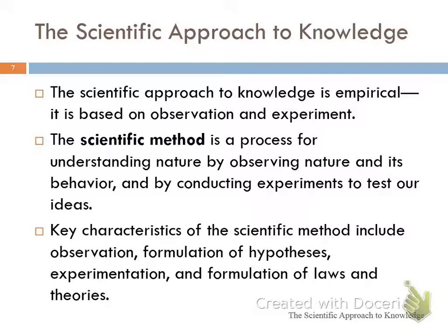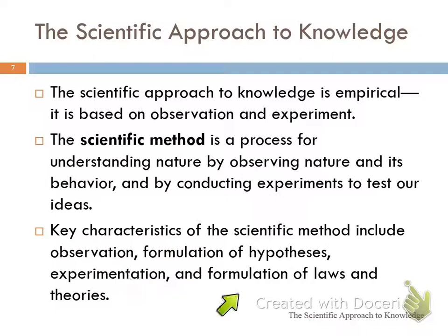We see things happening, we make an observation, and then we have an idea about that, and we do an experiment to test it. The scientific method is a process by which we can understand nature by observing it, observing its behavior, and then conducting experiments to see if we were right or not. Key characteristics include observation, the formulation of hypotheses, experimentation, and after those go around in a circle for a while, we get the formulation of laws and theories.